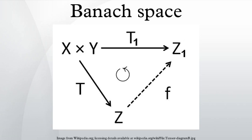If X is the direct sum of two closed linear subspaces M and N, then the dual X* of X is isomorphic to the direct sum of the duals of M and N. If M is a closed linear subspace in X, one can associate the orthogonal M⊥ in the dual. M⊥ is a closed linear subspace of the dual. The dual of M is isometrically isomorphic to X*/M⊥. The dual of X/M is isometrically isomorphic to M⊥.